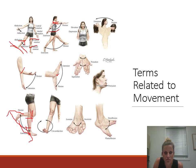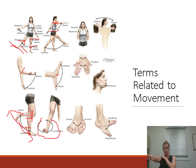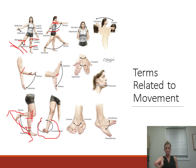Circumduction is when the entire limb moves in a circle — this is circumduction at the hip. You can also circumduct at the shoulder. People sometimes confuse circumduction with rotation. If I had a marker in my hand: when rotating, there's just one point on the paper — the hand isn't actually moving anywhere. With circumduction, I would draw a circle — the hand actually moves in a circle. The foot moves in a circle when the hip circumducts.